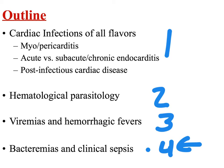Bacteremia is almost always asymptomatic. We are all transiently bacteremic virtually every day of our lives. Every time you brush your teeth, you become slightly bacteremic because you put microscopic scratches in your gums and your oral flora gets into your bloodstream. That does not cause you any kind of consequence. Clinical sepsis is obviously quite different — you have active infections spreading from one side of the body to the other, and in between you have a transient bacteremia happening.